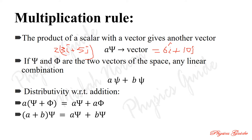The second property: if psi and phi are two vectors of the space, any linear combination a·psi plus b·psi is also a vector of that space. If we take one vector and multiply by two different scalars a and b then add, we get another vector belonging to the same linear vector space. The third property is the distributive property with respect to addition.